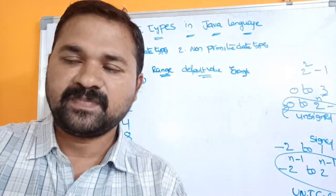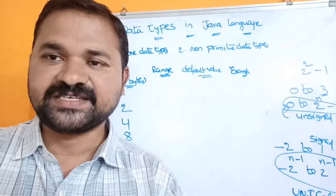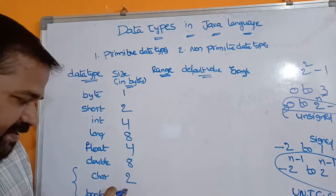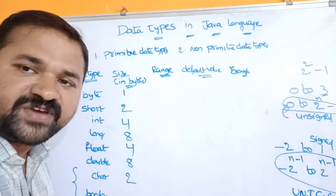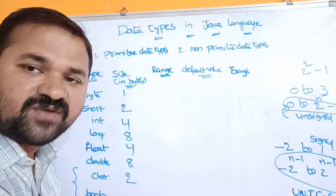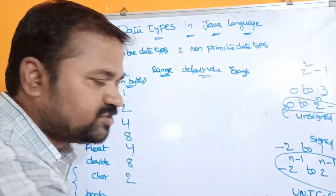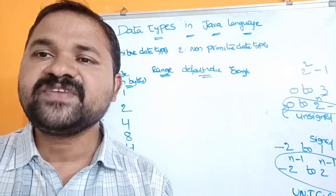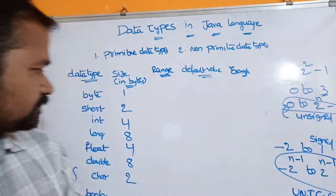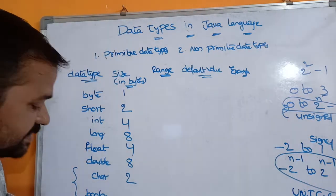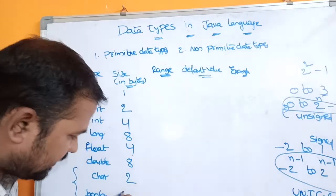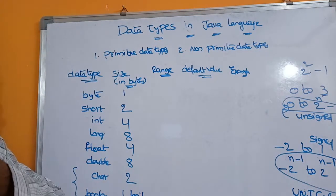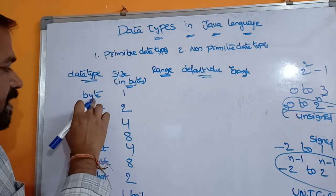In Java, char is 2 bytes because it uses Unicode representation. Unicode means we can represent any language — Telugu, Tamil, Malayalam, Kannada, Gujarati — with the help of this char. In C or C++ the size of char is 1 byte because it uses the ASCII character system, whereas in Java it uses Unicode. The size of boolean is 1 bit because it can store either true or false.